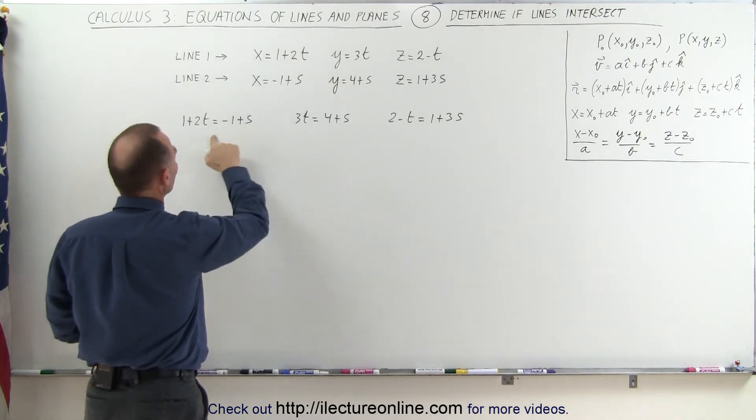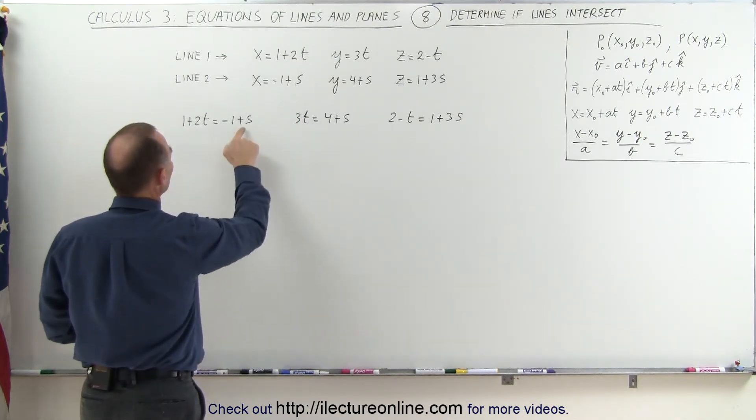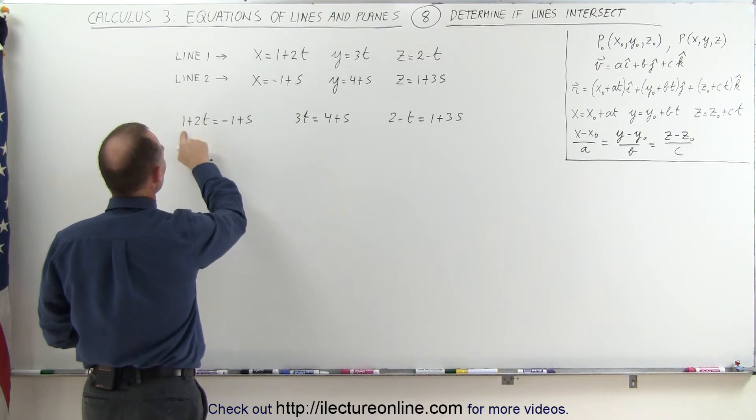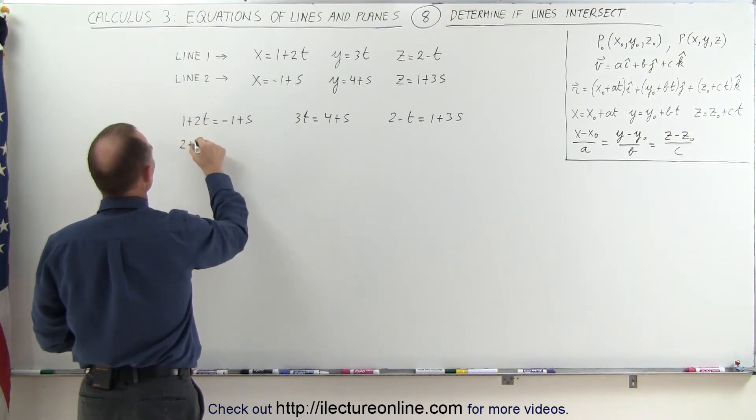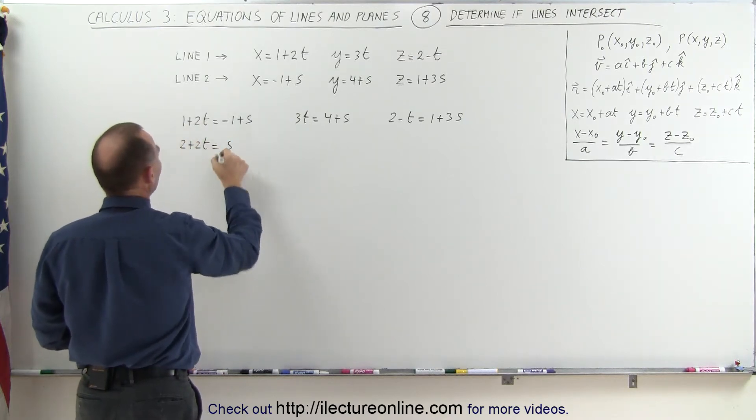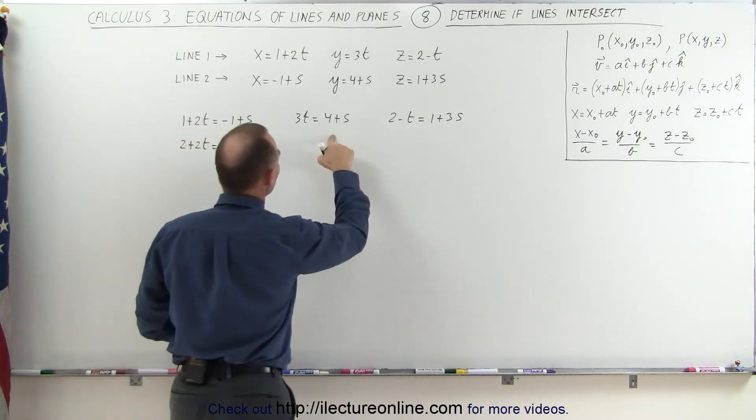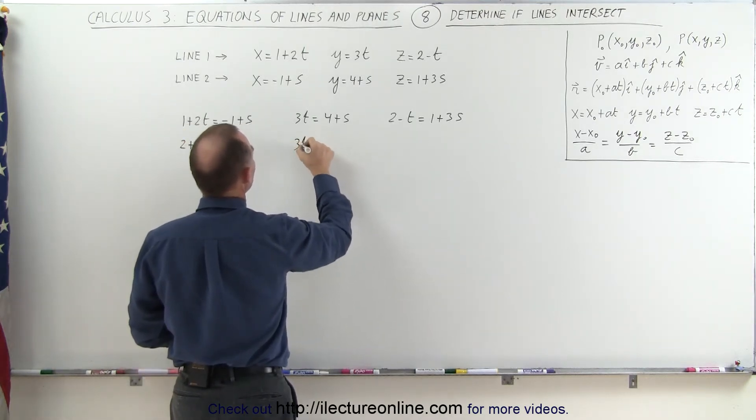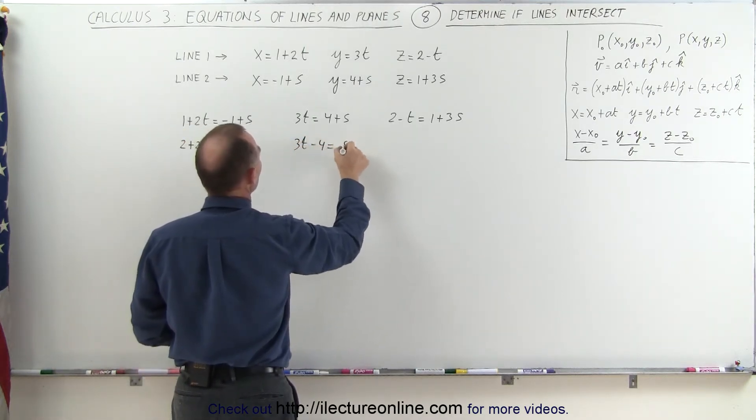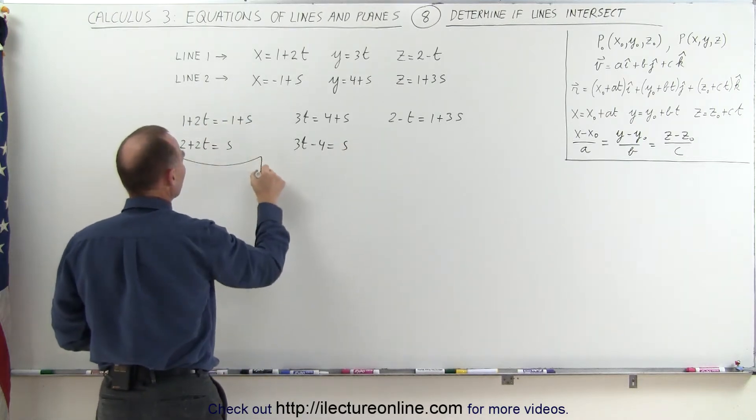Let's start with these two equations right here. Notice I can solve this for s, bringing the negative one over, we get 2 plus 2t is equal to s, and solving this equation for s, I can say that 3t minus 4 equals s.